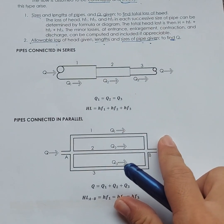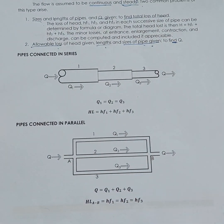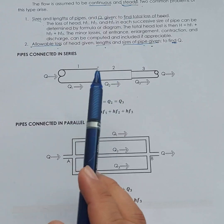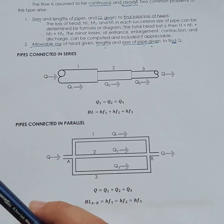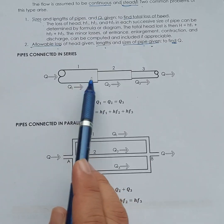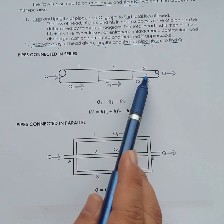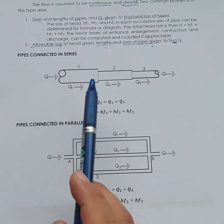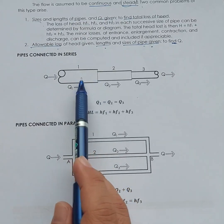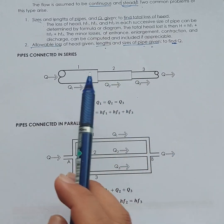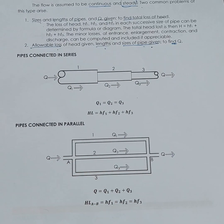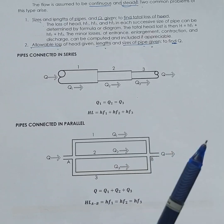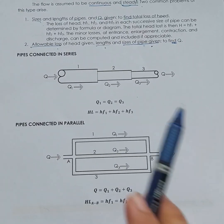And then, the next type of problem we will be encountering is that given the allowable loss or head loss due to friction, and then we determine the length, sizes of pipe, we're going to determine the discharge. This usually happens when we are trying to design a piping system. Sometimes we are limited to the loss of energy, so we're going to maintain a certain amount of discharge. Or sometimes if this is the allowable loss of energy, what would be the diameter of the pipe or whatsoever. Sometimes the diameter affects the loss of energy. So these oftentimes are the cases, two cases. Now we have pipe connections in here. We have pipes connected in series.